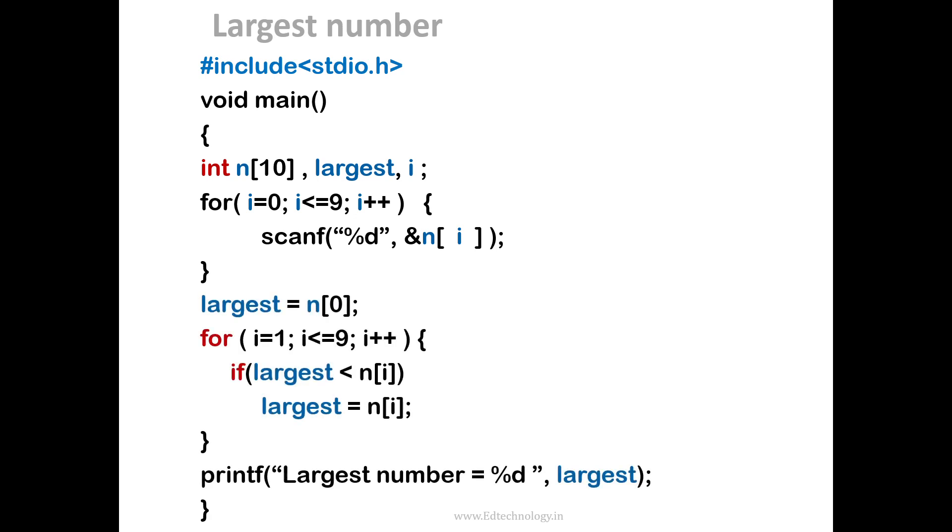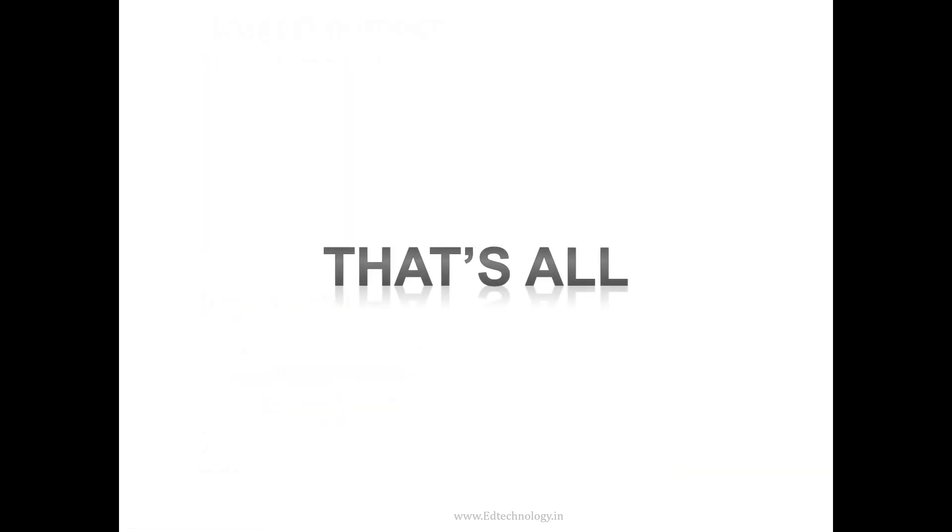Then the code says that you are storing the value of the first variable into the largest, and within the loop the loop logic says you are comparing each variable from one, which is post zero after zero to one, and then storing the largest value whichever turns out to be. And then finally outside the loop you are printing the largest value. So this is how you will be using a one dimensional array.